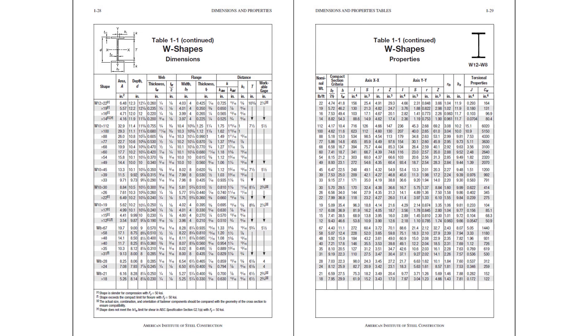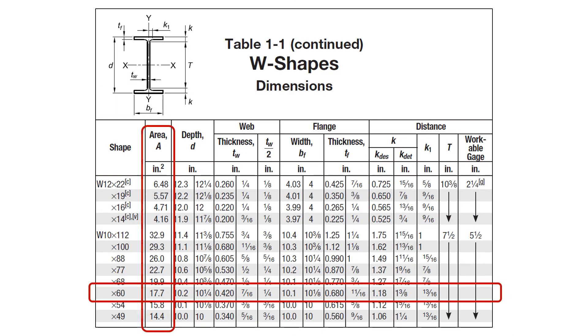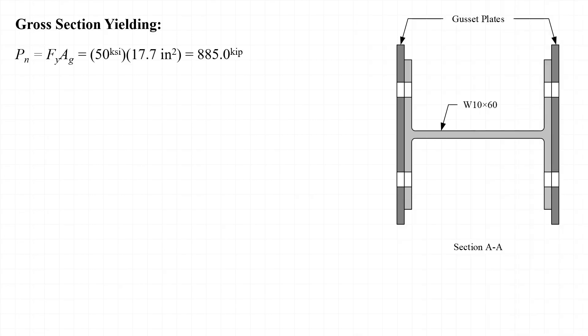Now we go to Chapter 1 of the AISC manual to look up the section properties of the W10 by 60. Zooming in, you can see that the cross-sectional area A sub g is 17.7 inches squared for the W10 by 60. So now we can calculate the nominal strength with respect to gross section yielding: 50 ksi times 17.7 inches squared equals 885 kips. Applying the resistance factor of 0.9, we have a design strength of 796.5 kips.